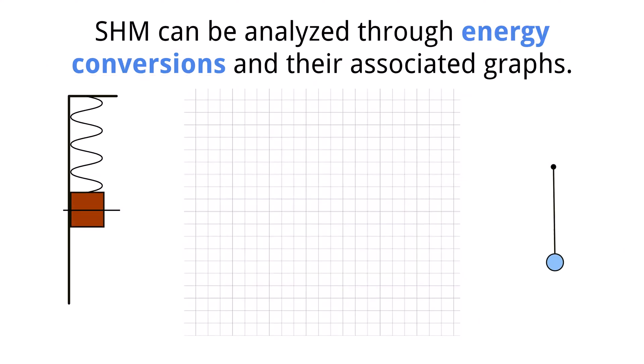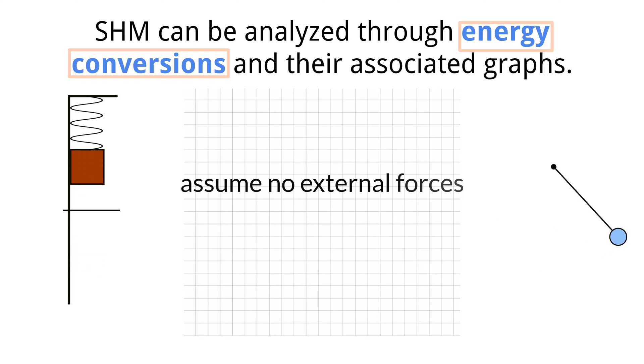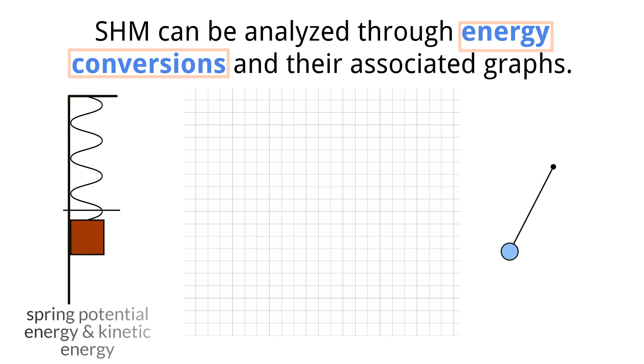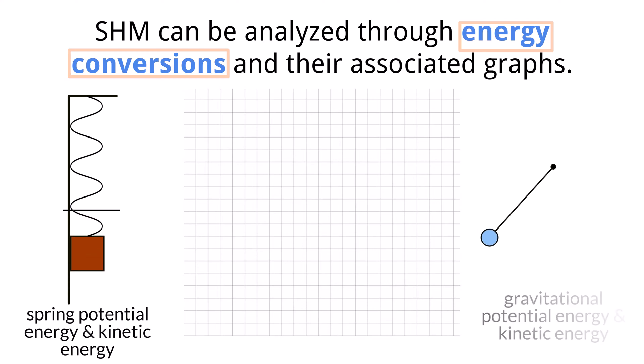As with most systems in motion, simple harmonic motion has its own corresponding energy transformations and associated graphs. To start with, we'll take the simplest scenario and assume there are no external forces, so the conservation of mechanical energy will apply. In a mass spring system, the conversion is between the spring potential energy and kinetic energy as there is a spring involved. In a pendulum, the conversion is between gravitational potential energy and kinetic energy as the system is partially dependent on the gravitational field.